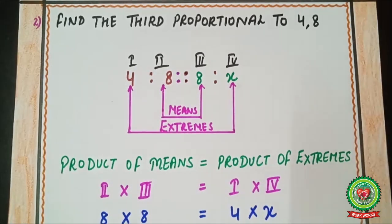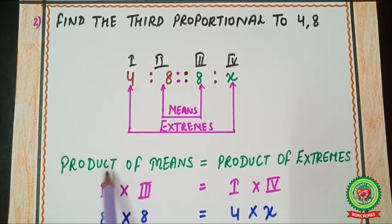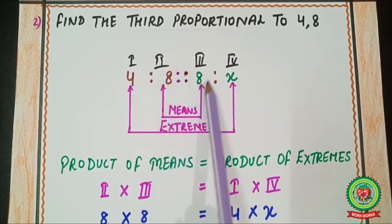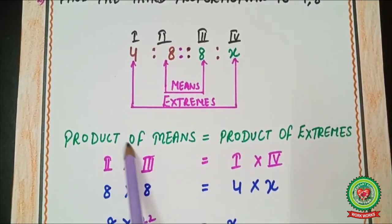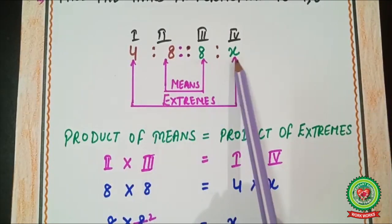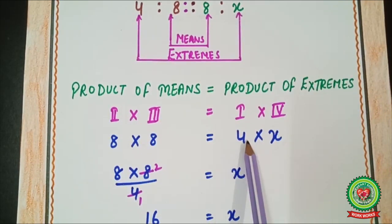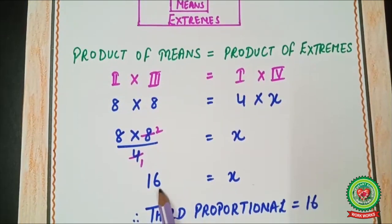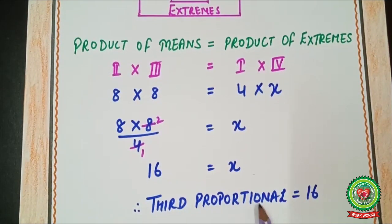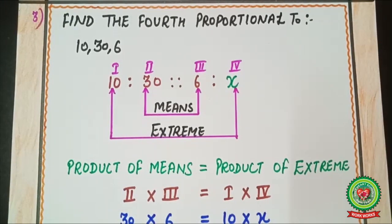In 4 : 8 :: 8 : x, the means are 8 and 8 and the extremes are 4 and x. Product of means equals product of extremes: 8 × 8 = 4 × x. Shifting 4 to the left-hand side gives x = 64 ÷ 4 = 16. Therefore, the third proportional is 16.